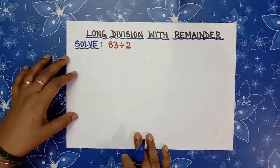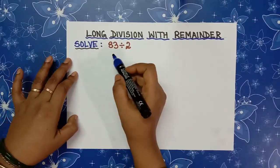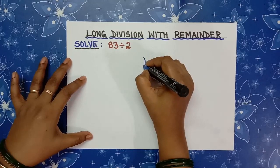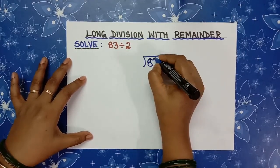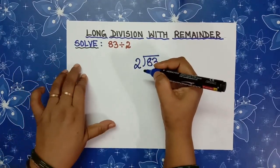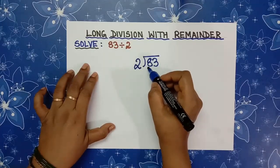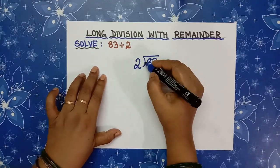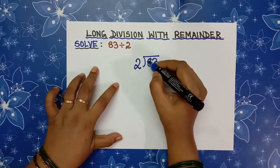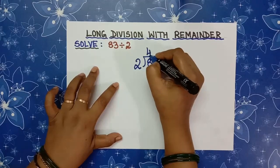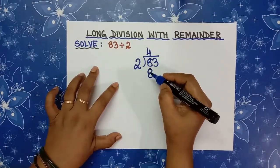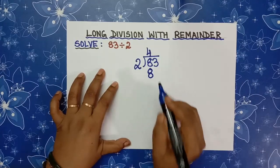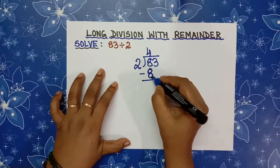Let's do one more example with remainder. Solve 83 divided by 2. First, what we have to do — arrange these numbers in their places. 83 divided by 2. Start with the tens place. Divide 8 by 2. 2 goes in 8 four times: 2 ones are 2, 2 twos are 4, 2 threes are 6, and 2 fours are 8. Write 4 in the tens place above 83 and write 8 under 8. And subtract. 8 minus 8 is 0.